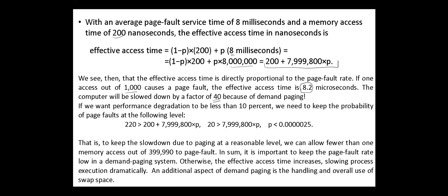If we want performance degradation to be less than 10 percent, we need to keep the probability of page faults at the following level. That is, to keep the slowdown due to paging at a reasonable level, we can allow fewer than one memory access out of about 400,000 to page fault. All this means that it's important to keep the page fault rate low in a demand paged system, otherwise the effective access time increases, slowing process execution dramatically.